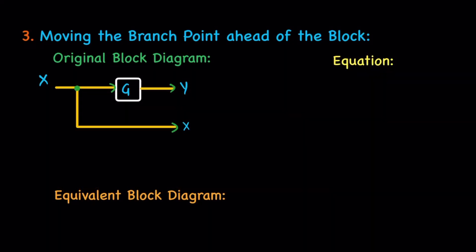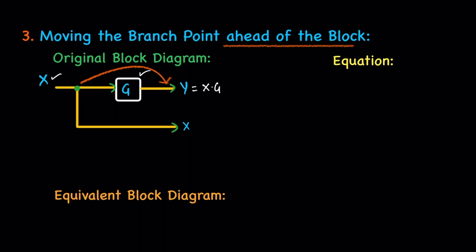Rule three: moving the branch point ahead of the block, meaning the point is moving to the right side. The key point is that the final result must not change before and after the position change. In the original diagram, y equals the product of x and g, since both are in the same path. On the bottom side, the same x is taken, so the result is just x. The equation is y equals x times g.